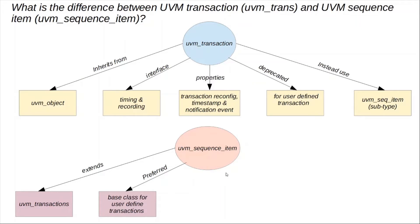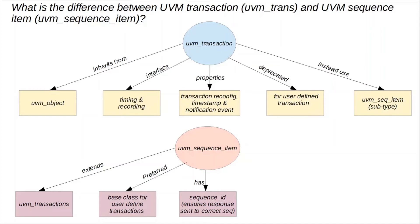What does UVM sequence item add? It adds something called a sequence ID, which is really helpful in routing the response back to the correct sequence. When you send something from the sequence or the sequencer to the driver, that's called a request. When something is returned based on that request, it's called a response. The sequence ID ensures that the sequencer will route the response back to the right sequence, because these days we have really complicated multitudes of sequences running in parallel or with different priorities on the same sequencer.